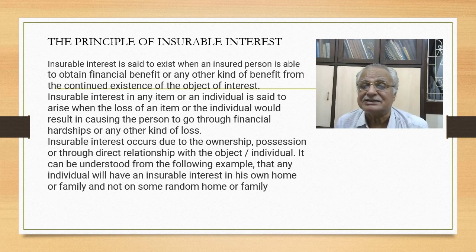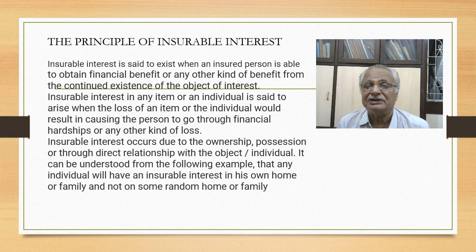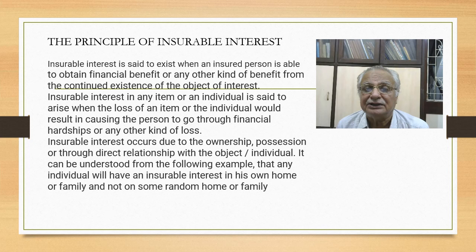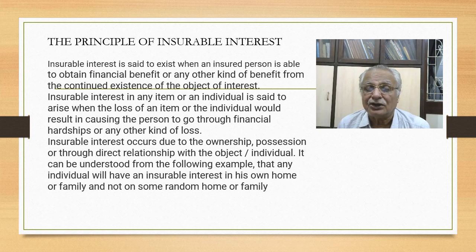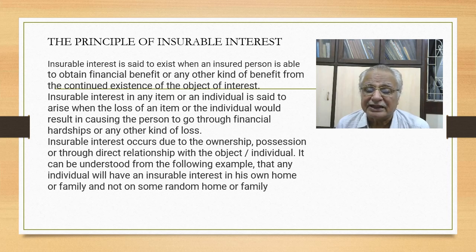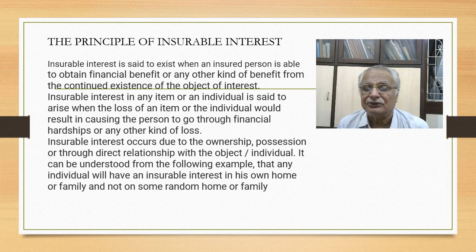Insurable interest exists when the insured person is able to obtain financial benefit from the continued existence of the object of interest. An individual is said to have insurable interest when the loss of that item or individual would result in causing the person financial hardship or any other kind of loss. Insurable interest occurs due to ownership, possession, or through a direct relationship with the object or individual. Any individual will have insurable interest in his own home or family, and not in some random home or random family.